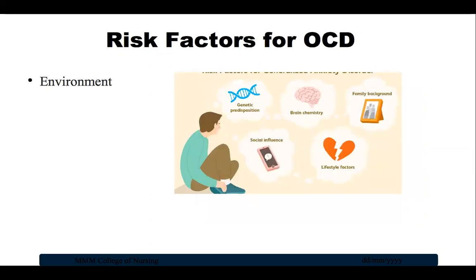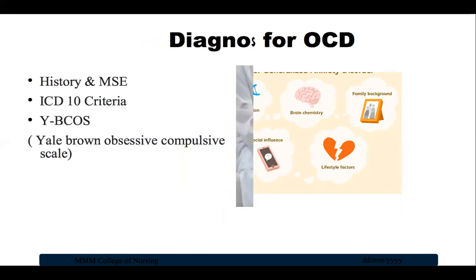Regarding environmental risk factors, an association between childhood trauma and obsessive compulsive symptoms has been reported, though more studies are needed. In some cases, children may develop OCD or OCD symptoms following streptococcal infection — this is called pediatric autoimmune neuropsychiatric disorder associated with streptococcal infections, otherwise known as PANDAS.